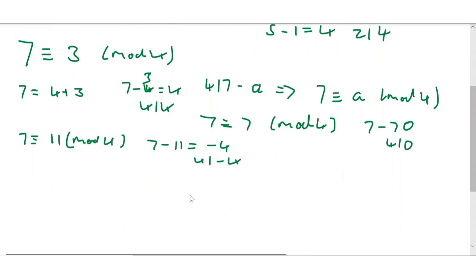And we can keep doing this. It turns out that not just for 7, for any number, a congruent to b mod n is equivalent to a is congruent to b plus kn, where k is just any integer.